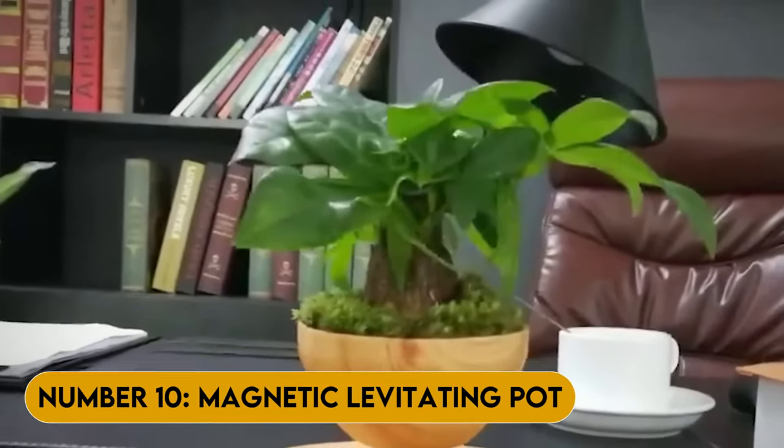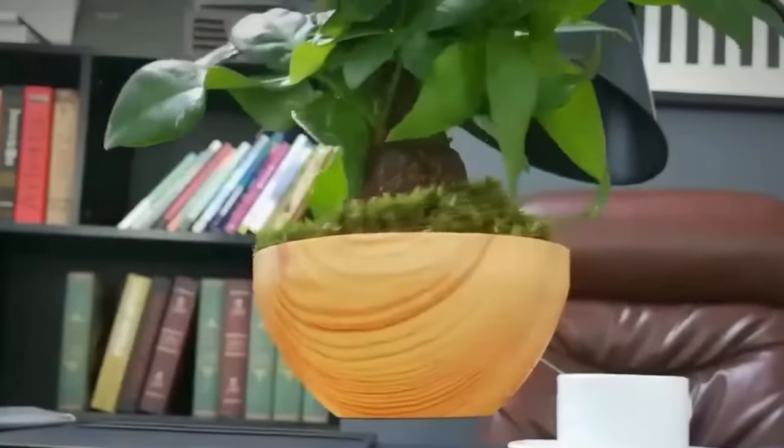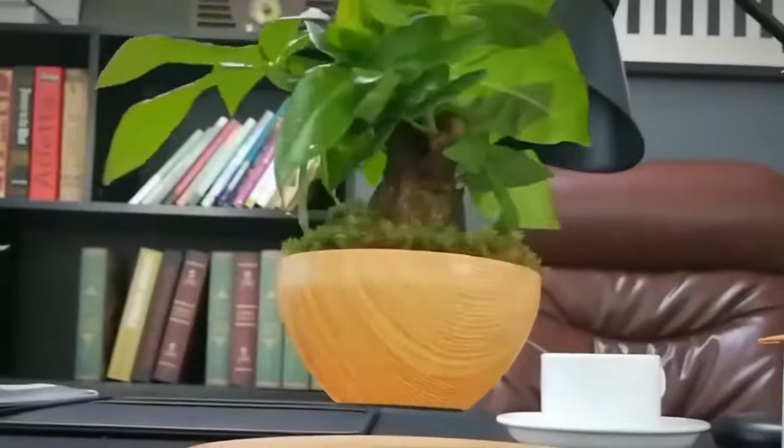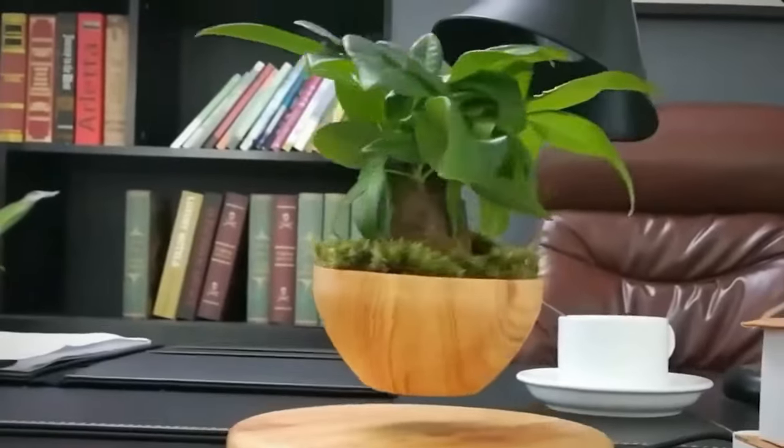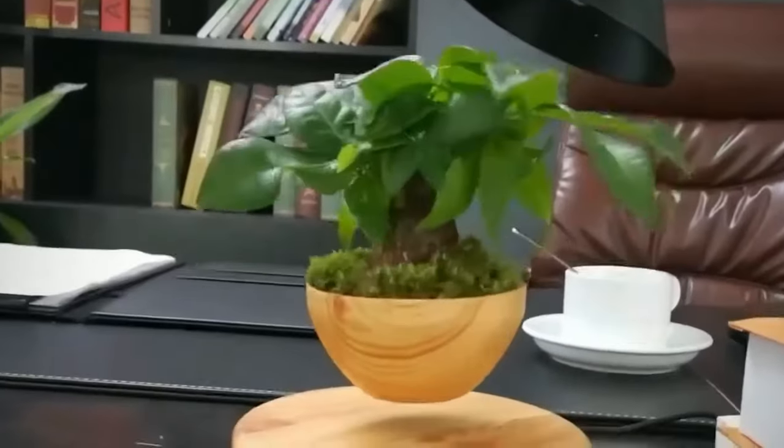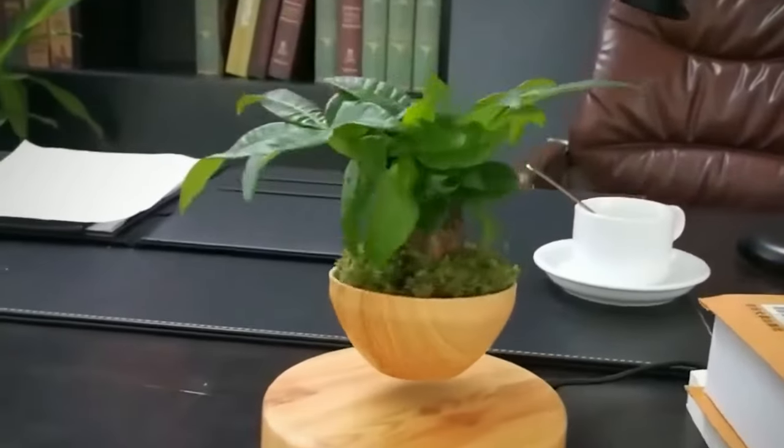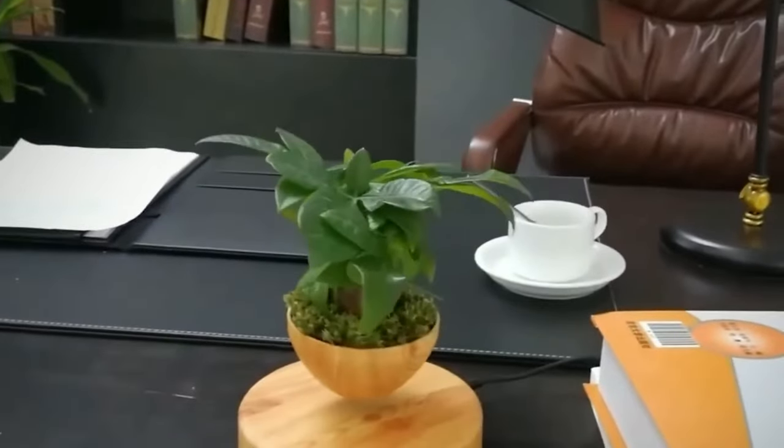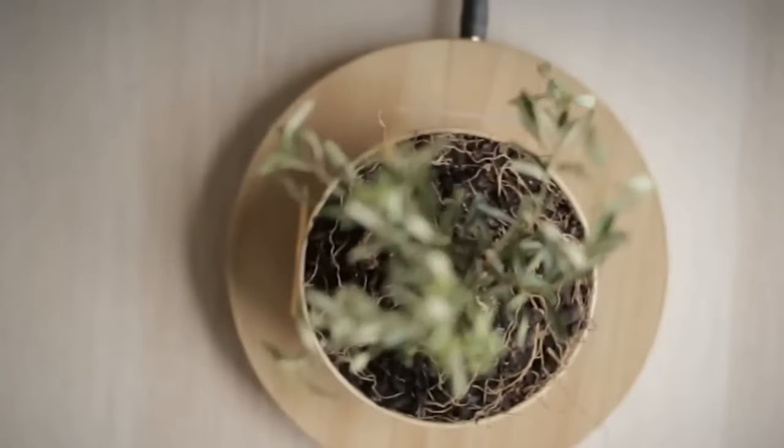Number 10. Magnetic Levitating Pot. This tiny gadget is essentially a pot that levitates above a magnetic base. Yes, you read that right. It freaking levitates. Not only is it super cool to look at, but it's also incredibly functional. The pot itself is made of high-quality borosilicate glass, which means it's durable, heat-resistant, and easy to clean.